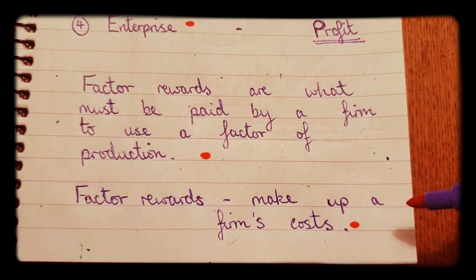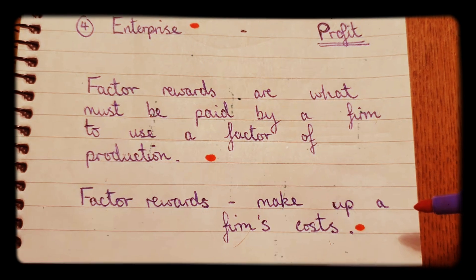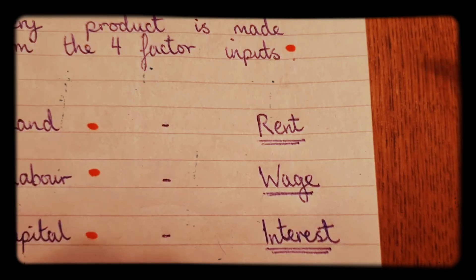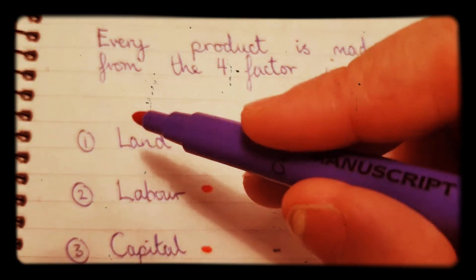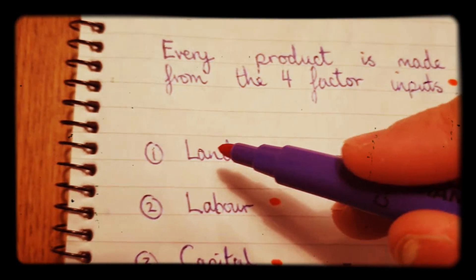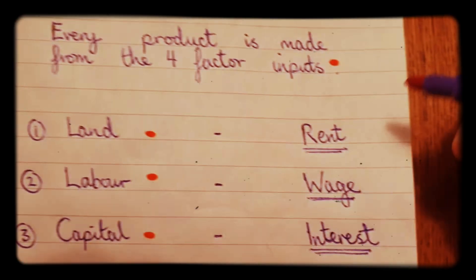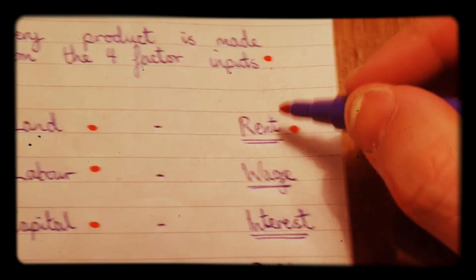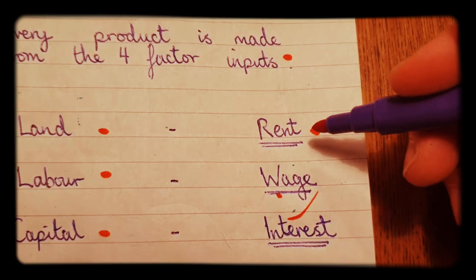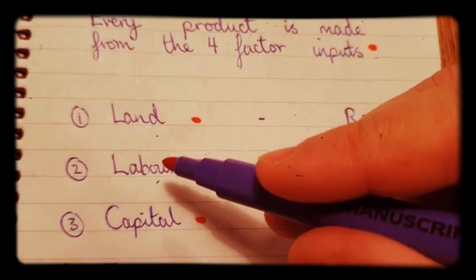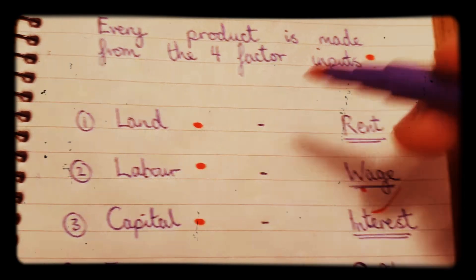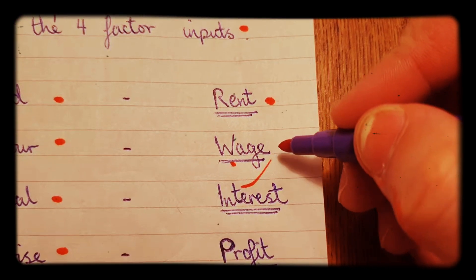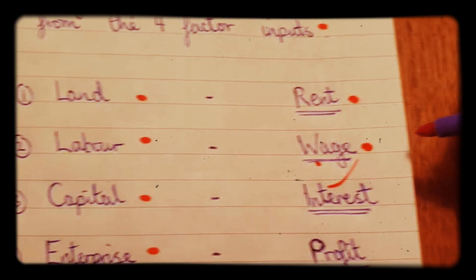So what are these different costs — the factor rewards — that a firm must pay? Well, first of all, for land, to use land the firm must pay rent. The factor reward for land is called rent. For labor, in order to benefit from labor, the firm must pay a wage to its workers.